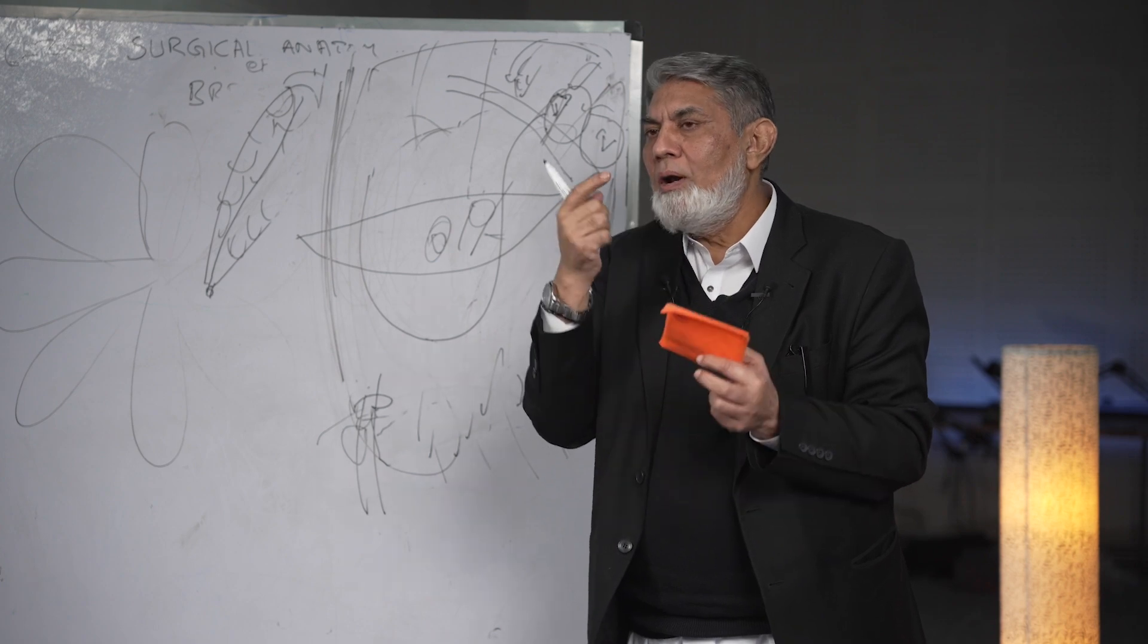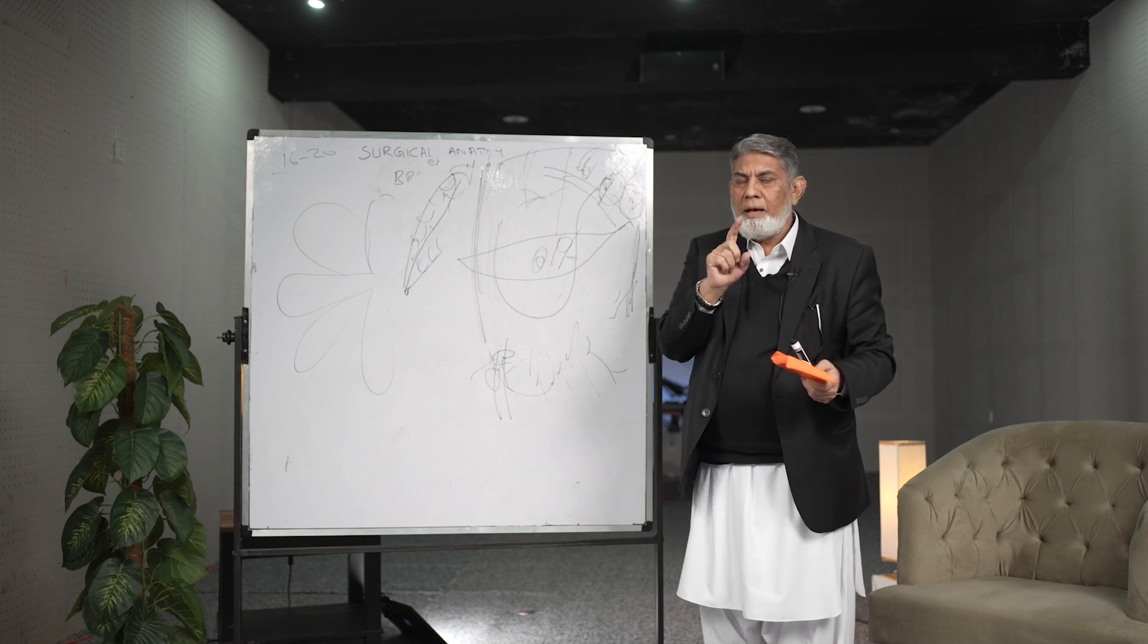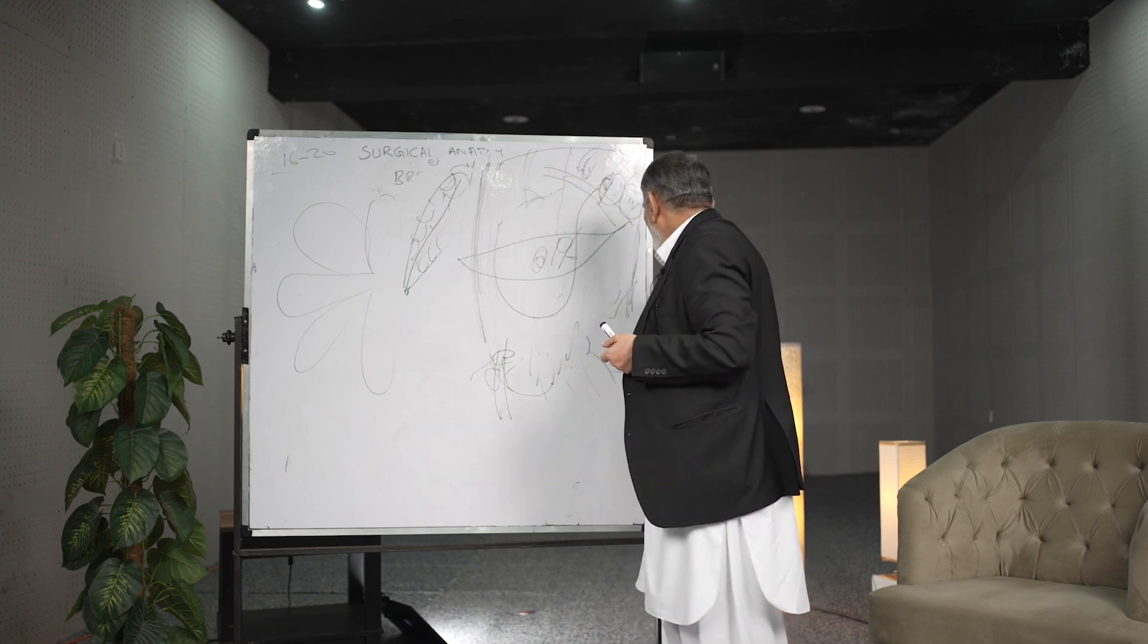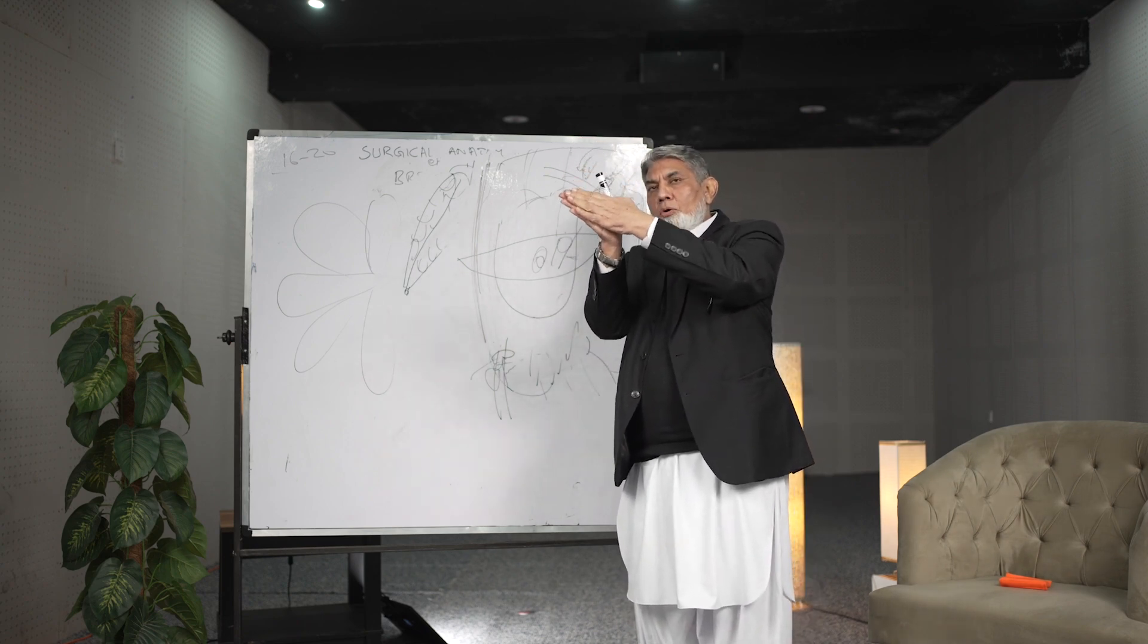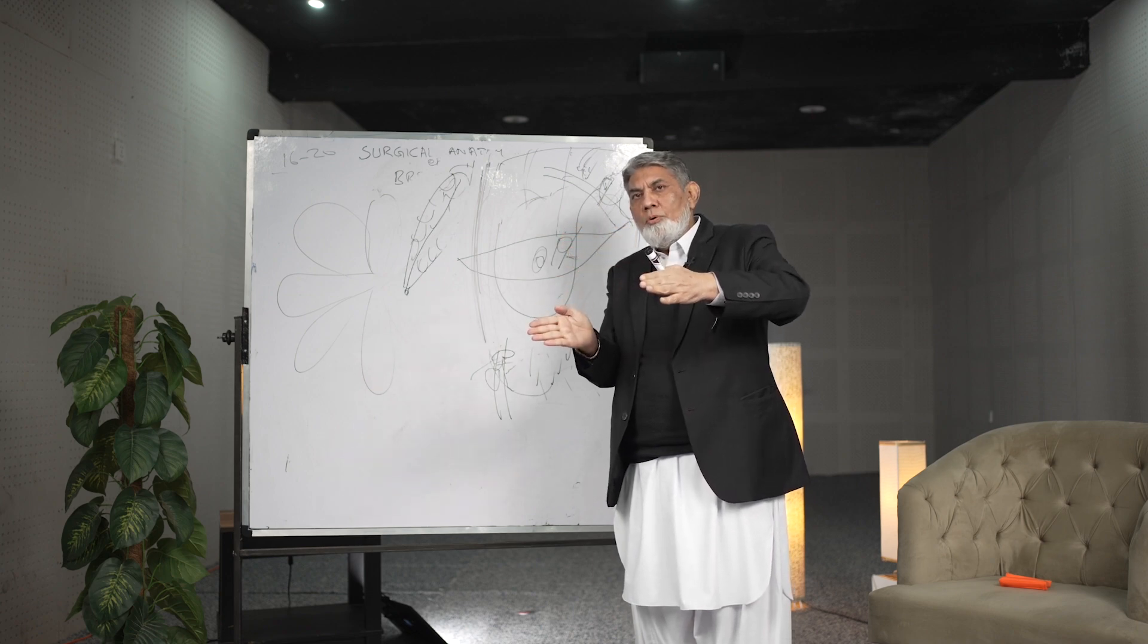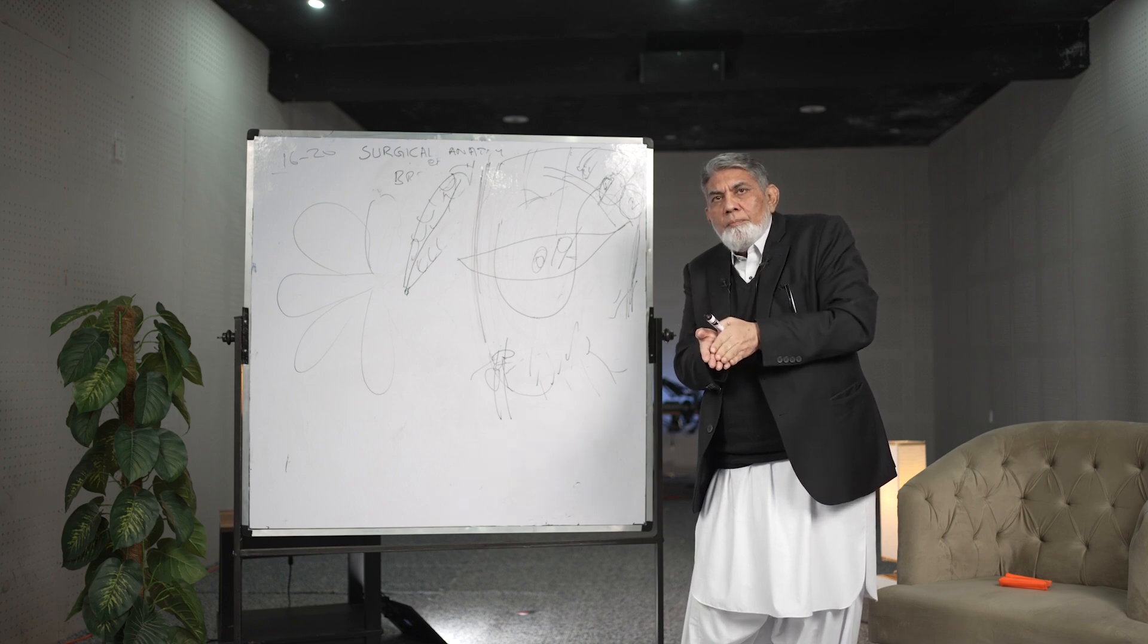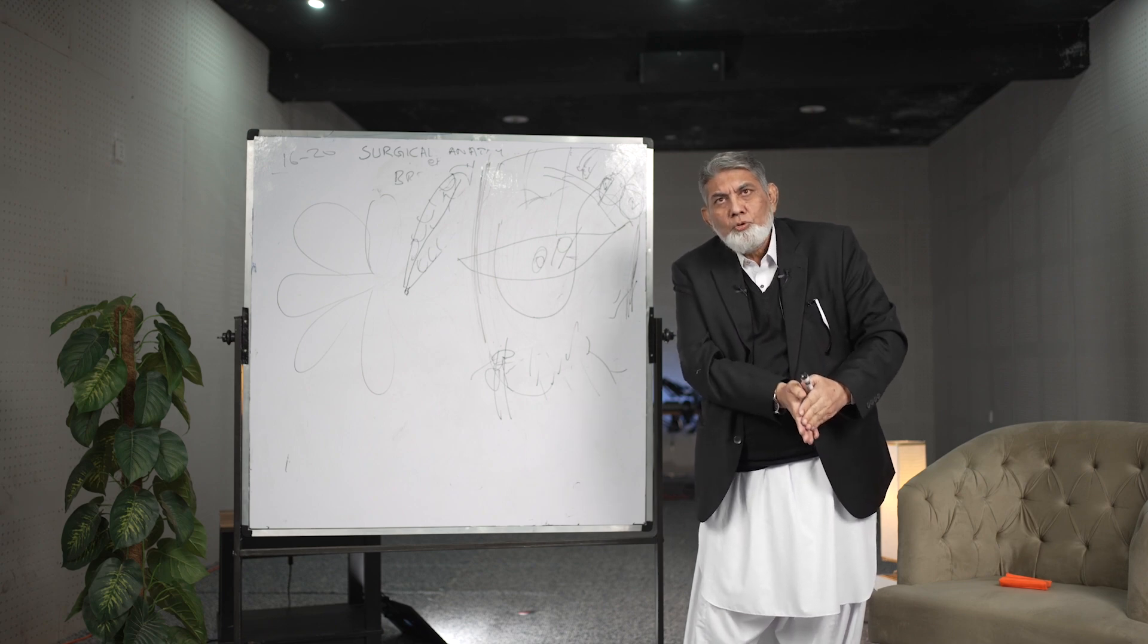And there I would like to share with you a very important anatomical aspect and that is the distribution of clavipectoral fascia. Clavicle, if you visualize, the lower end of it has got two layers of fascia. They go and as pectoralis minor muscle comes, it splits into two. It engulfs the pectoralis minor muscle and again joins. When it again joins it becomes suspensory ligament of axilla and then it is attached to the skin of the axilla.